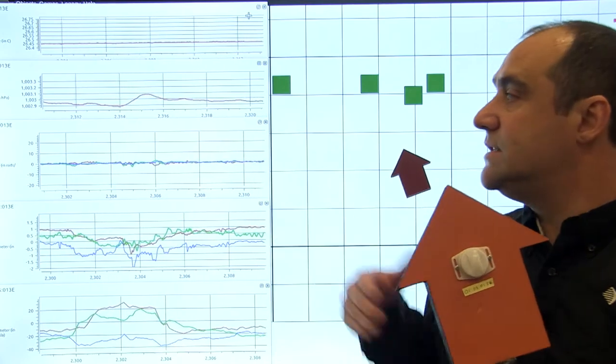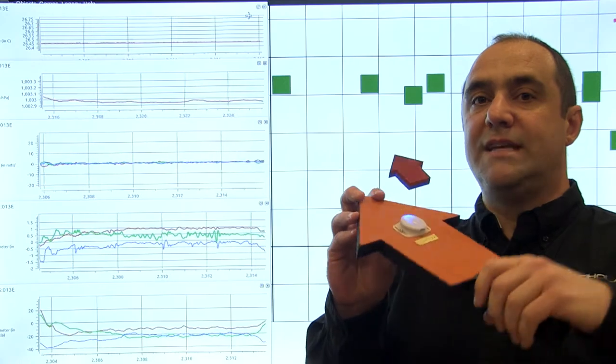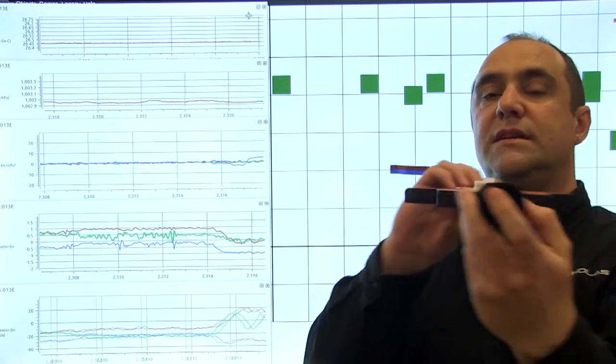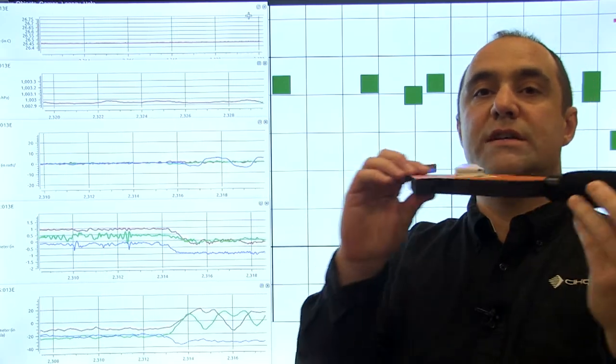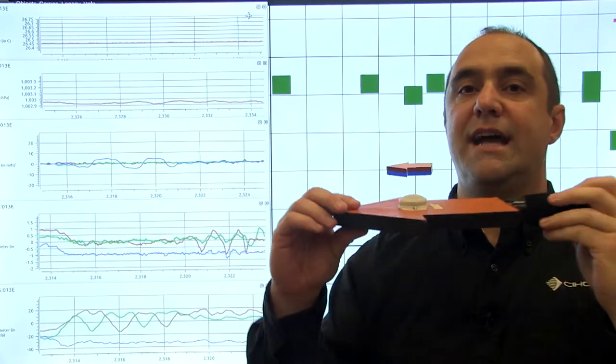The next three sensors are gyro, accelerometer, and magnetometer in that order. As I move the tag in the three dimensions, you'll see the gyro change for degrees per second. You'll see the accelerometer change for the acceleration in that axis.